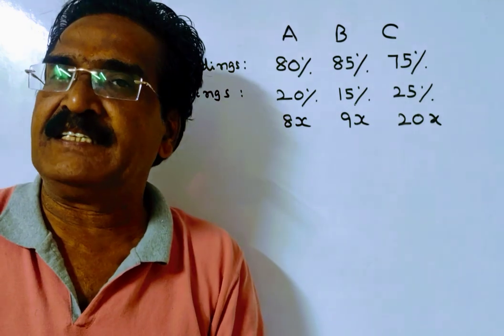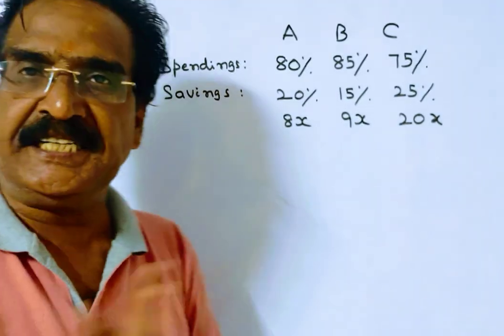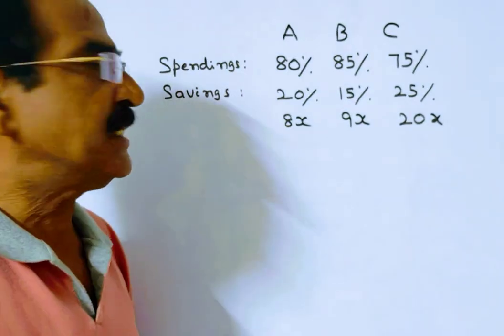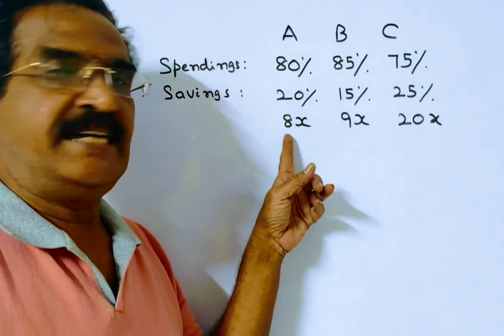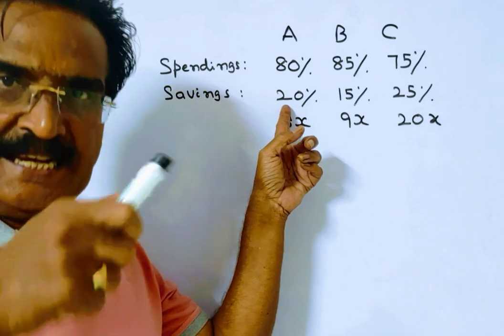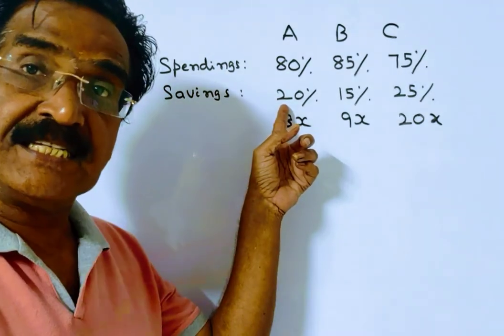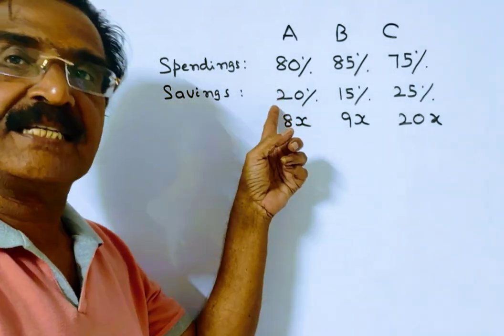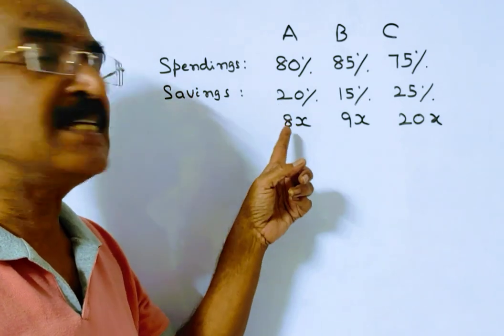Friends, actually it is given that their savings are in the ratio 8x to 9x to 20x. It means their savings are 8x, 9x, and 20x. So friends, 20% of A's income is his savings. So 20% of A's income is 8x.